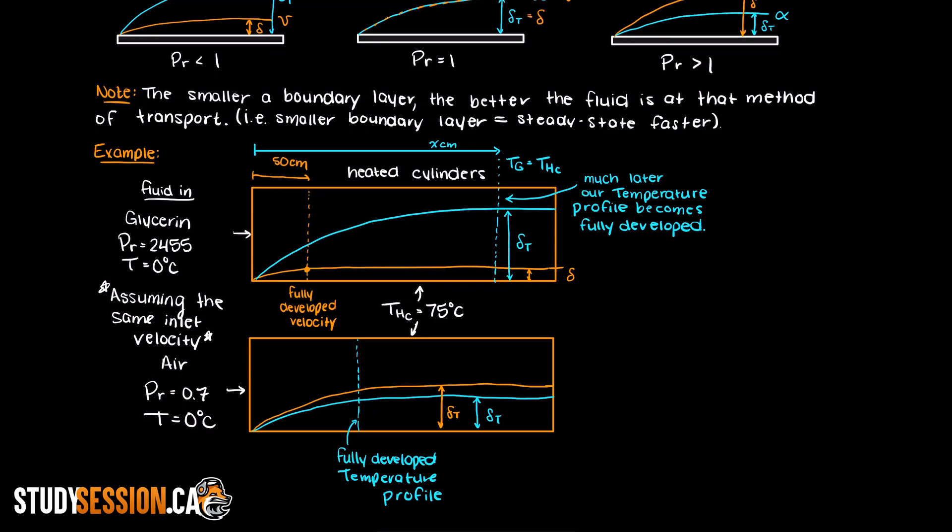To make sure this fully registers with you, let's look at the Prandtl number's formula for these fluids. The viscosity of glycerin is about 950 centipoise, its specific heat is roughly 2.4, and its thermal conductivity is about 0.28. Whereas air has the following properties.